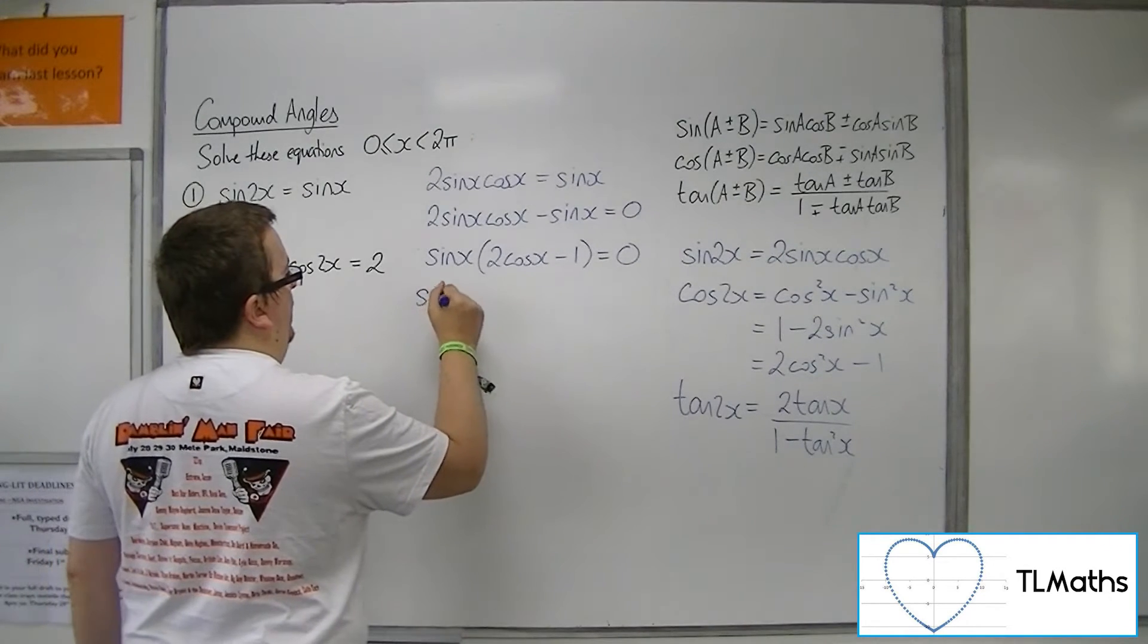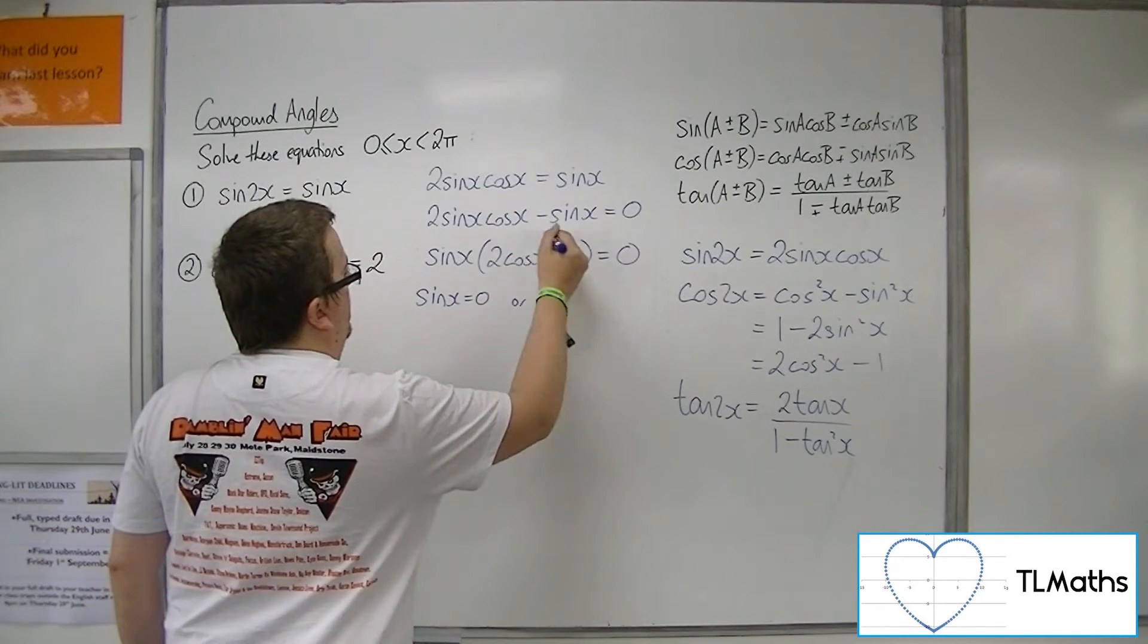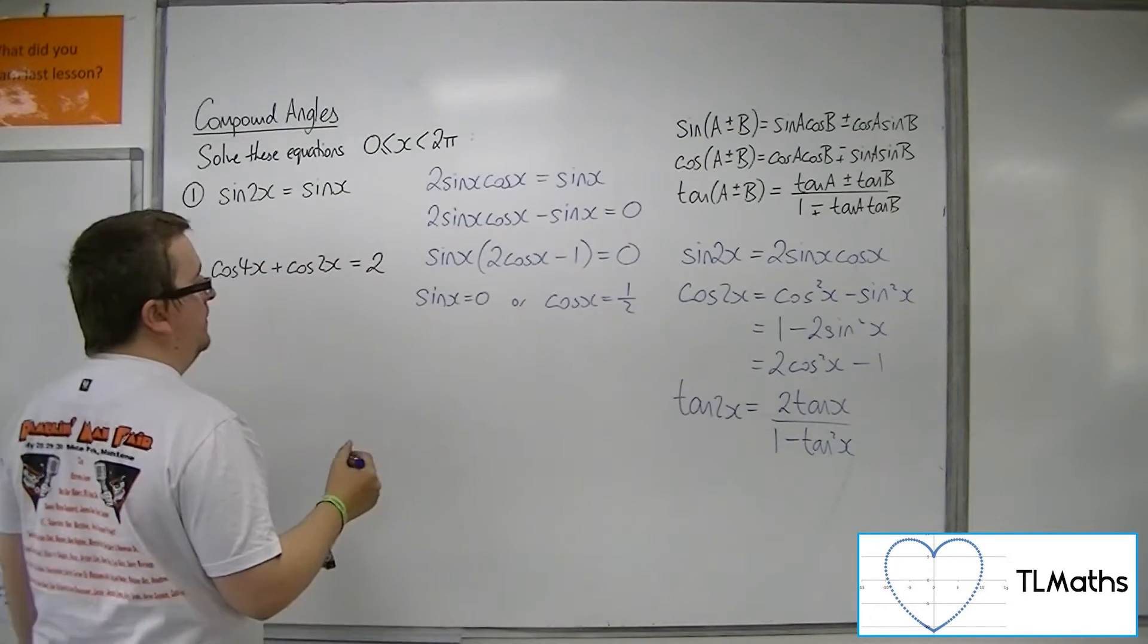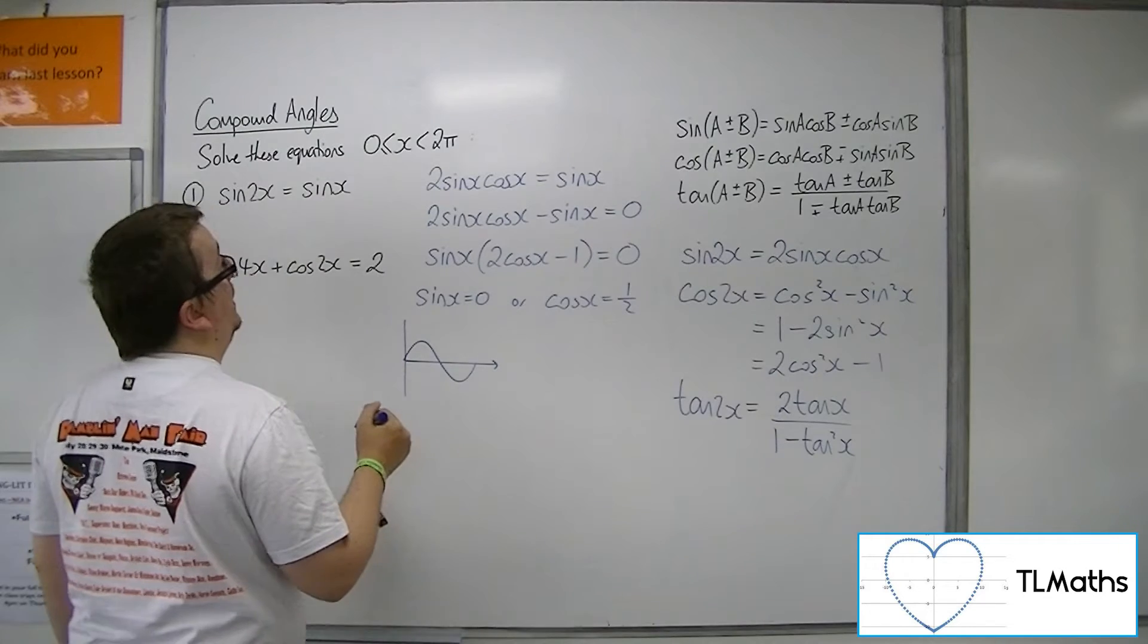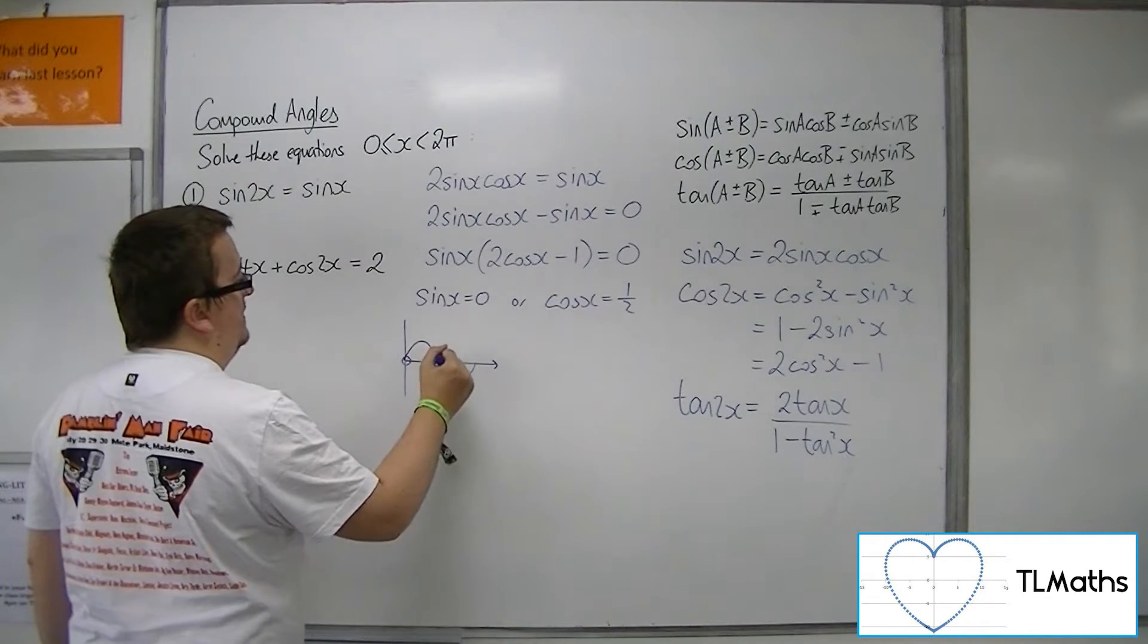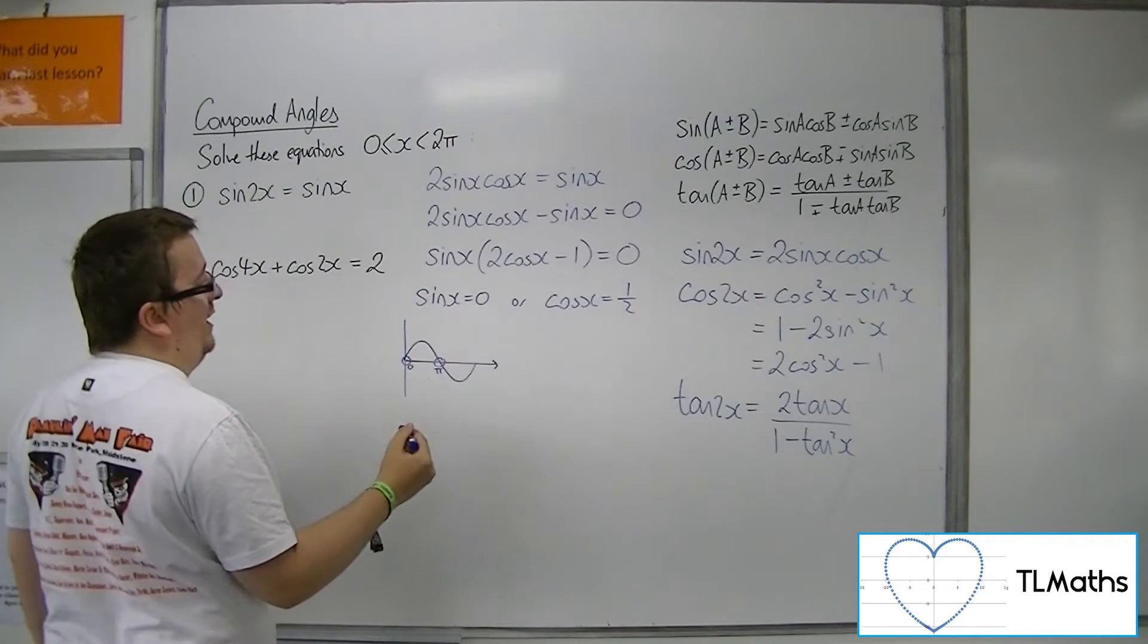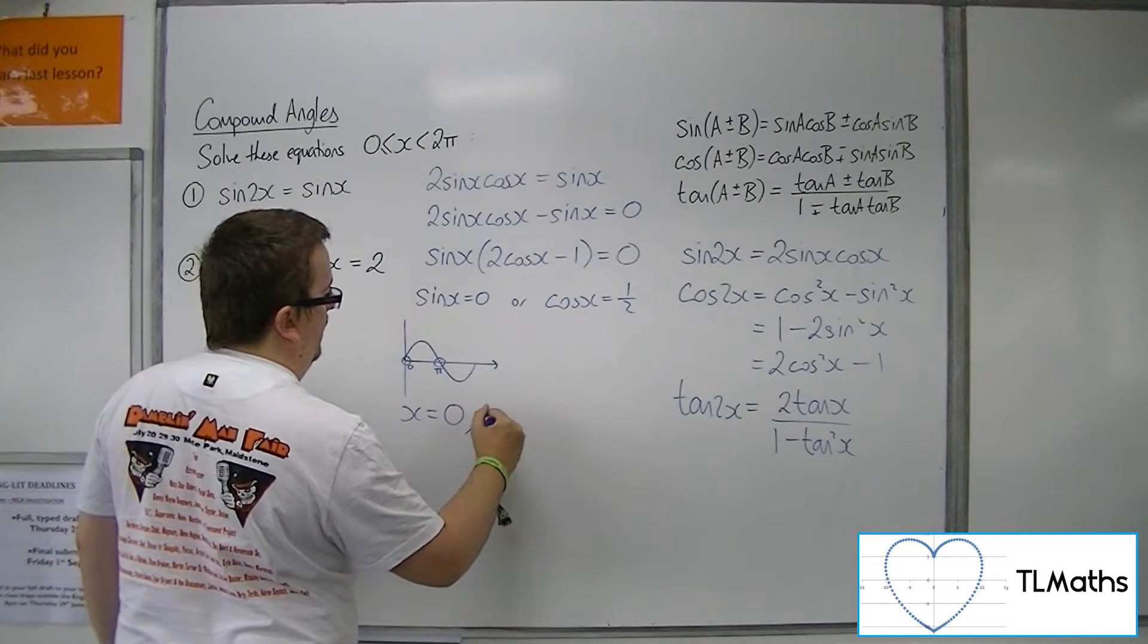So either sin x equals 0 or this bracket is 0 so cos x would have to be a half. Now sin between 0 and 2π is 0 at 0 and π. Now the 2π is not included here, so x could be 0 or π.